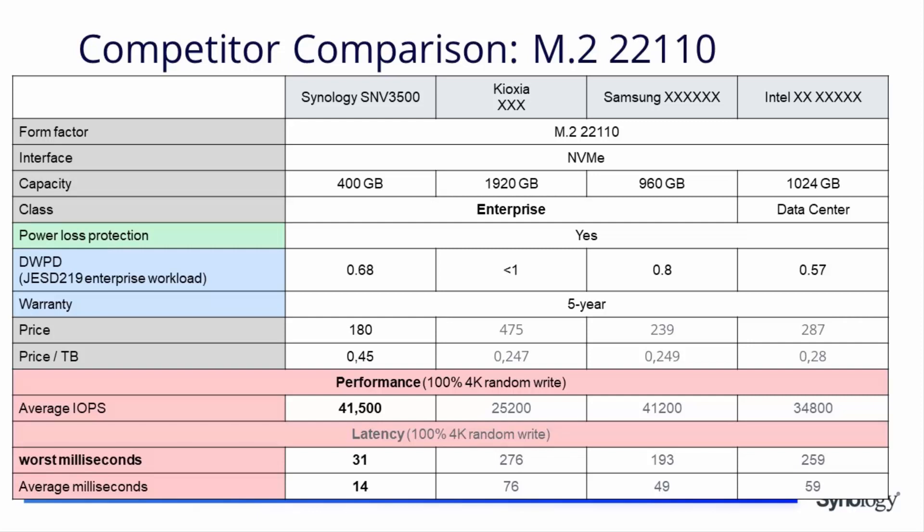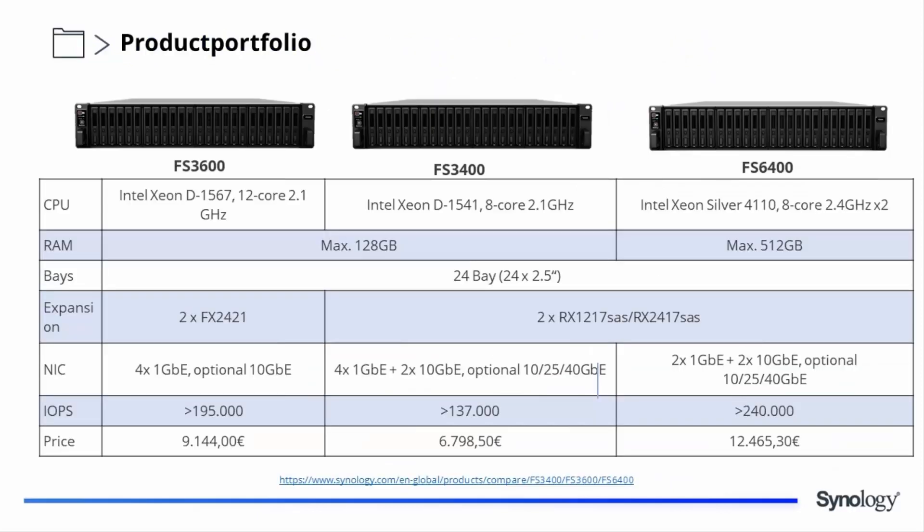On top of that, the SNV3500 rivals competitors in the DWPD segment as well and comes with power loss protection. When it comes to our FS portfolio, Synology currently offers three models: the newly announced FS3600, FS3400, and FS6400. A short breakdown of the most important specs is shown here, and the full specifications can always be found in the datasheets on our website.